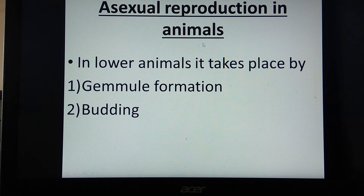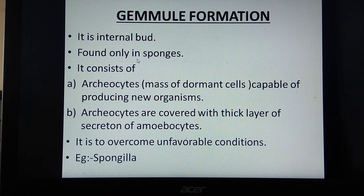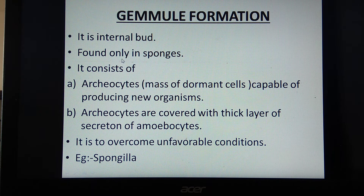Asexual reproduction in animals takes place by gemmule formation and secondly by budding. A gemmule is an internal bud which is formed inside the body. It is found only in sponges, which belong to phylum Porifera — pore-bearing animals where there is no tissue, organ, or system formation. In sponges, cells are aggregated to result in formation of a sponge-like structure.